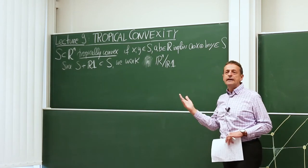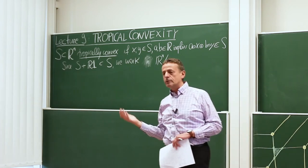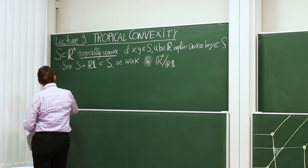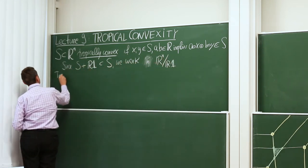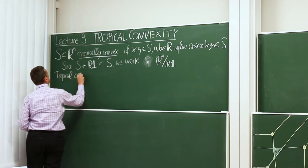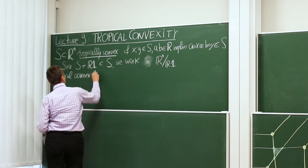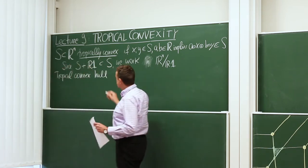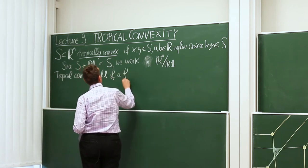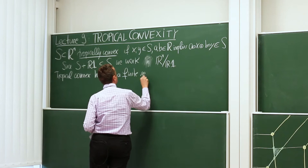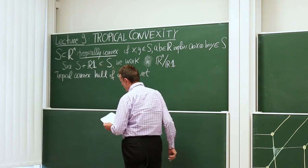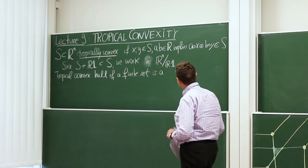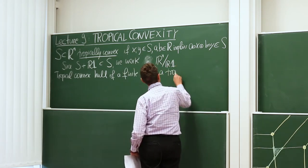In practice, we will tropically scale and set the last coordinate to be zero. So the tropical convex hull of a set is the smallest tropically convex set containing the given set. We're particularly interested in the convex hull of a finite set. If you have a finite subset of R to the N, then this smallest tropically convex set containing it is called a tropical polytope.